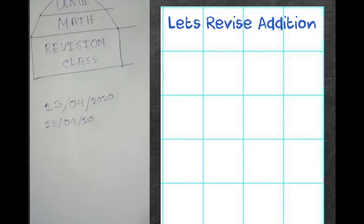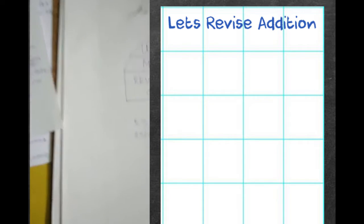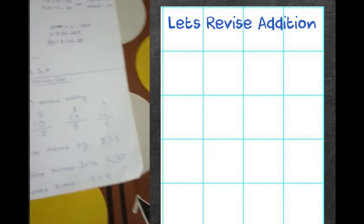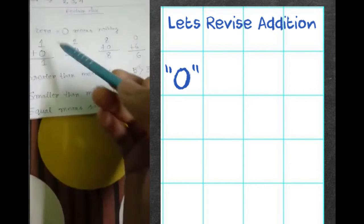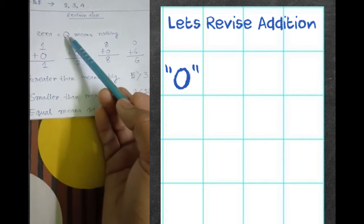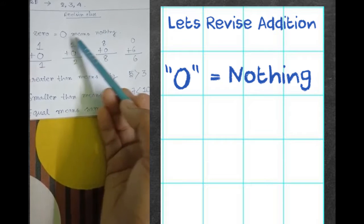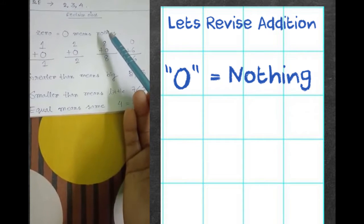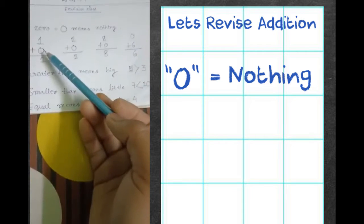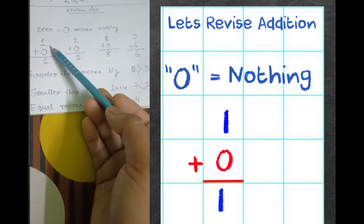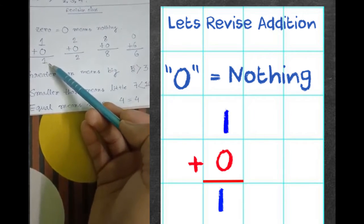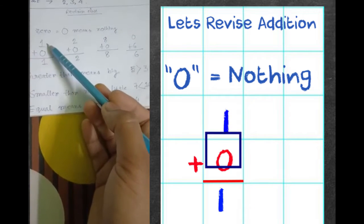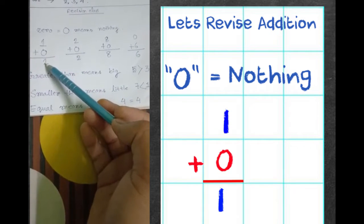Let's start with addition. Zero - we all know this number zero means nothing, zero equals nothing. So if we add zero to a number, the number remains the same. If we add zero to one, the number is same, here one.